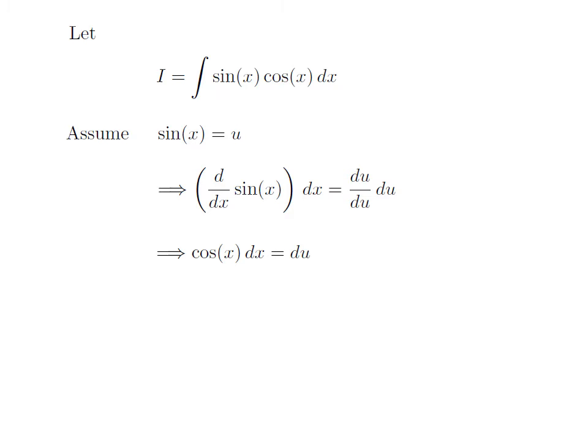As we know, differentiation of sine of x with respect to x is equal to cosine of x and differentiation of u with respect to u is equal to 1. So we are left with cosine of x into differential of x is equal to differential of u.